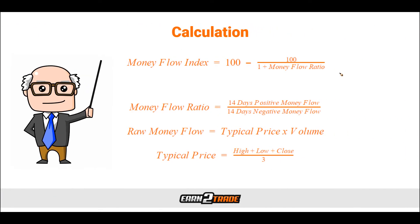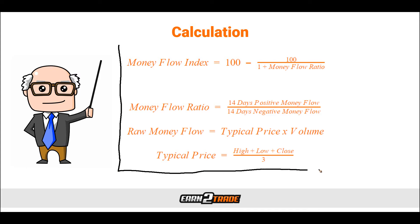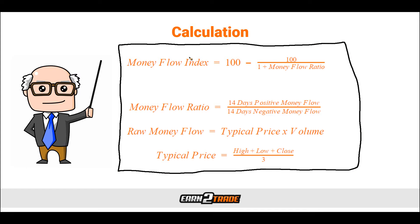Let's take a moment to talk about the calculation process behind the MFI so we actually understand where the information is coming from instead of just blindly following it. The Money Flow Index is equal to 100 minus 100 over 1 plus the money flow ratio. The money flow ratio is equal to the 14-day positive money flow over the 14-day negative money flow. The raw money flow is equal to the typical price times the volume. And the typical price is the high plus low plus close, all over 3.